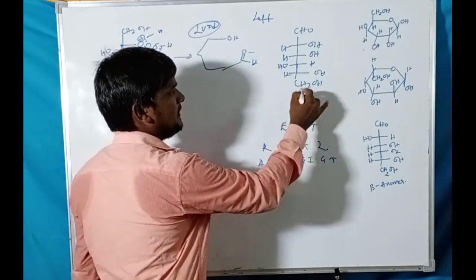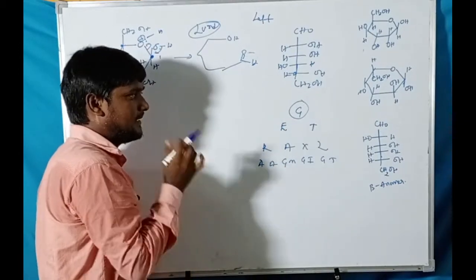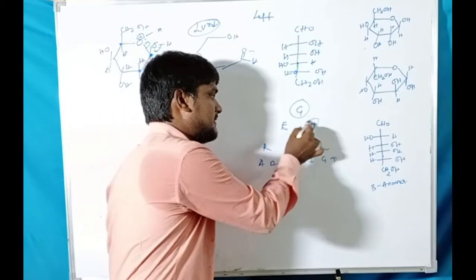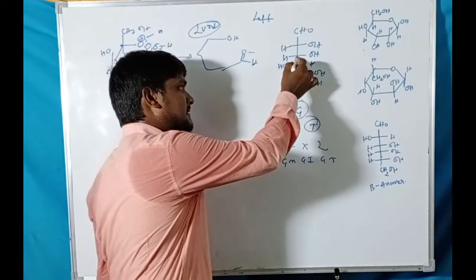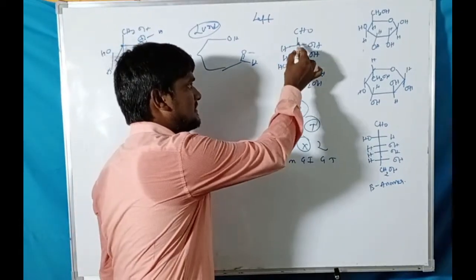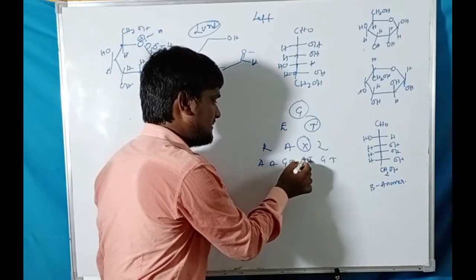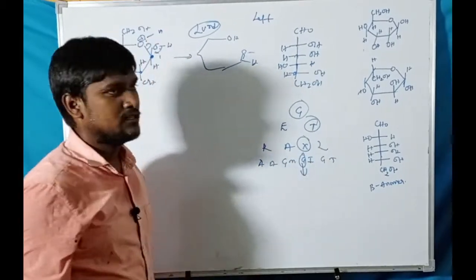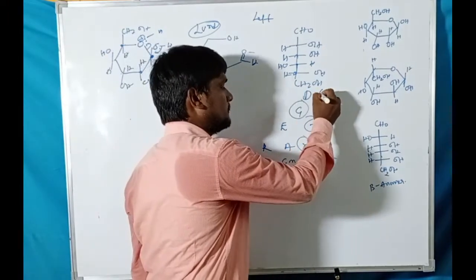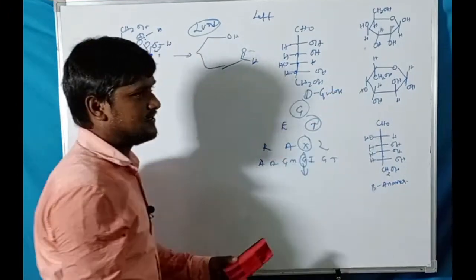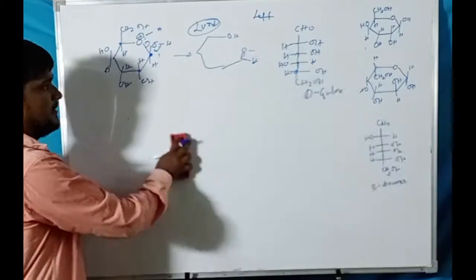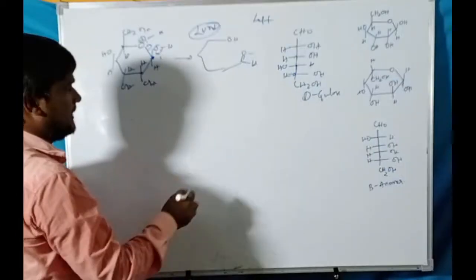Applying the naming tree to the derived Fischer projection: the bottom carbon is in the glyceraldehyde family. The next chiral center is left side — select the right branch. The next chiral center is also left side — select the right branch. The next chiral center is right side — select the left branch. The compound name is D-gulose.